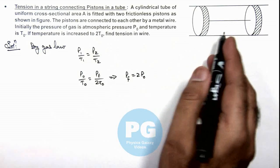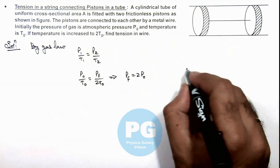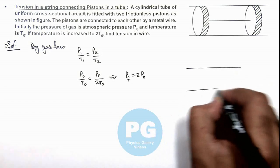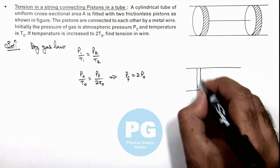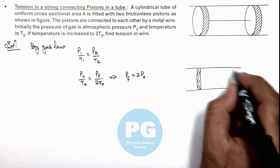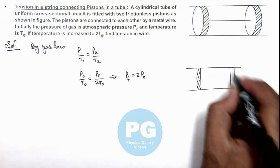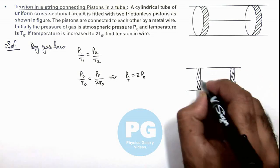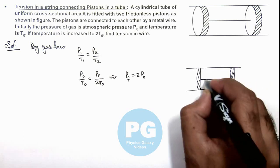So if inside pressure is 2P₀, then the situation would be this: if this is one piston, this is another piston, and the connecting string is having a tension T.